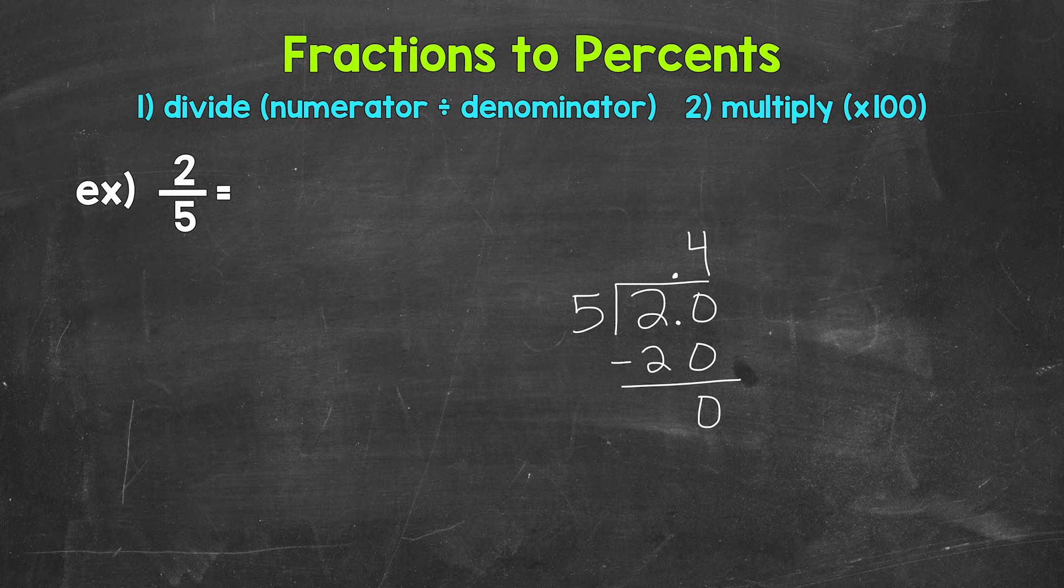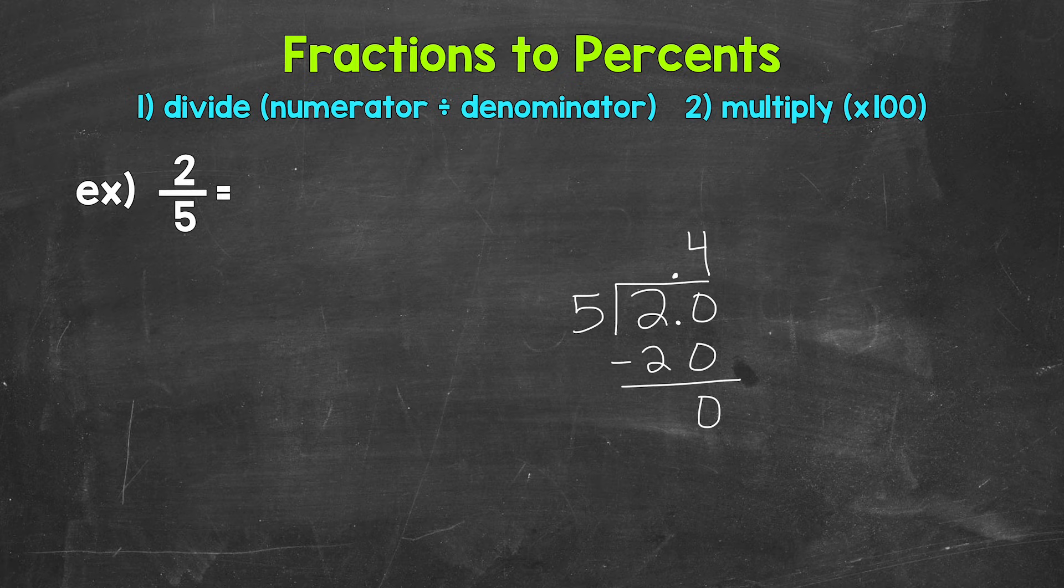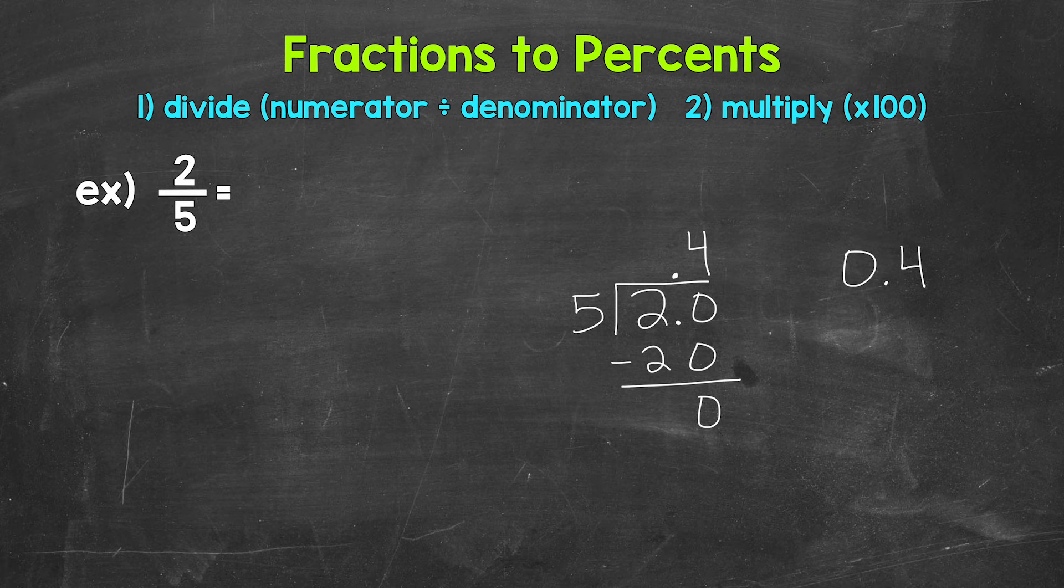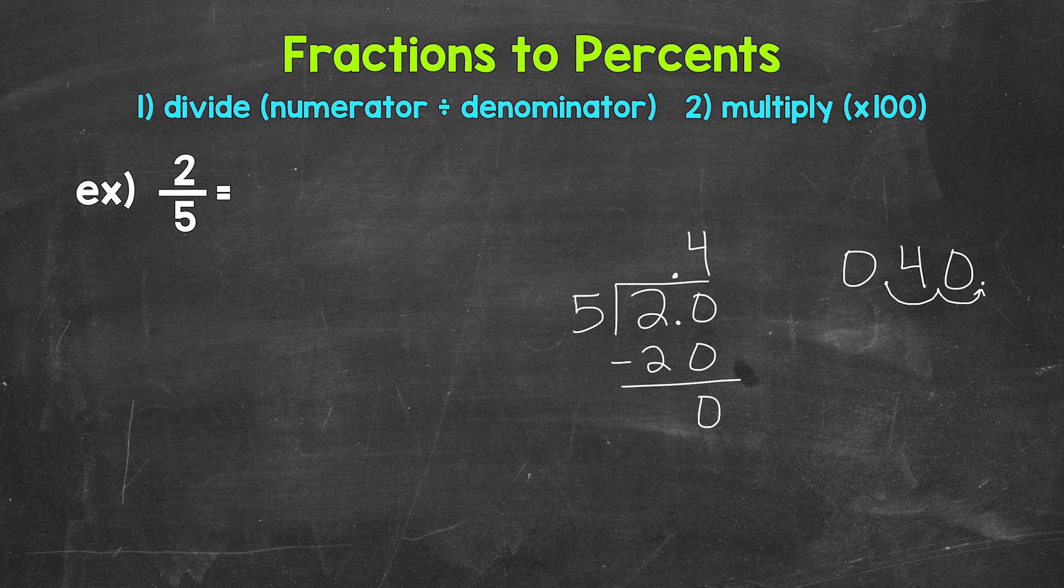Two fifths equals four tenths. Now we need to convert this decimal to a percent by multiplying it by 100. And again, we can do this by moving the decimal twice to the right. So let's rewrite four tenths off to the side here and move the decimal once, twice to the right. And we fill this gap, this place with a zero. So we get 40.